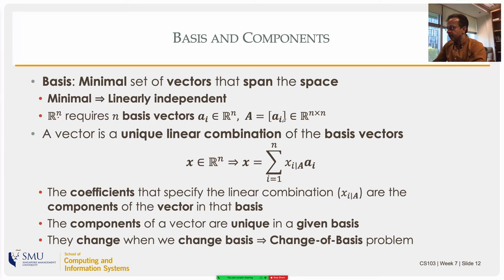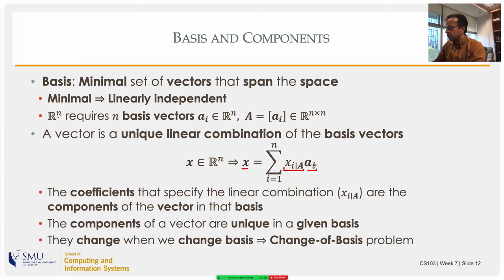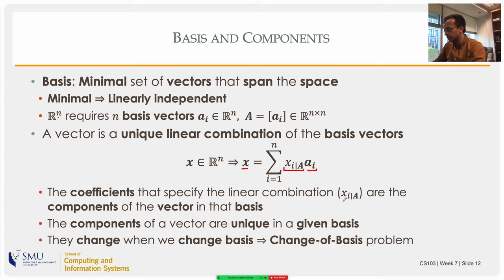Introducing a new notation: suppose you have a basis of A_i, which are columns of a matrix A. Then any vector x in R^n can be written as a linear combination of the columns of matrix A. Those scaling factors are the components of vector x in the basis A_i — that's the definition of components. The coefficients that specify the linear combination are the components of the vector in that basis, written as x_i bar A, the i-th component of x in basis A.